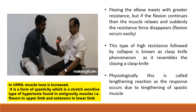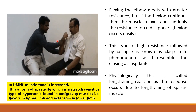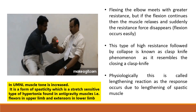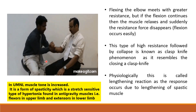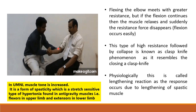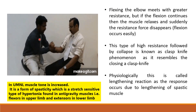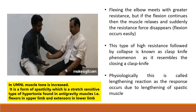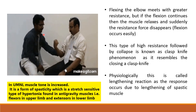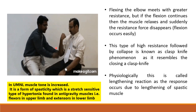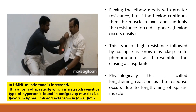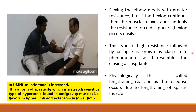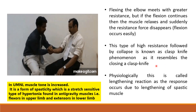This clasp knife movement — that initial resistance followed by easy or relaxed movement — is related to the upper motor neuron lesion. Here we can see an example of clasp knife spasticity of the elbow. The person is trying to flex the elbow; initially he is facing more resistance. But if the flexion continues after a certain point, the resistance is released and suddenly the muscle is relaxed. This type of high resistance followed by collapse is known as the clasp knife phenomenon, and it resembles the closing of a clasp knife.